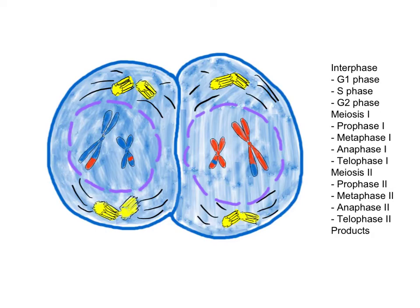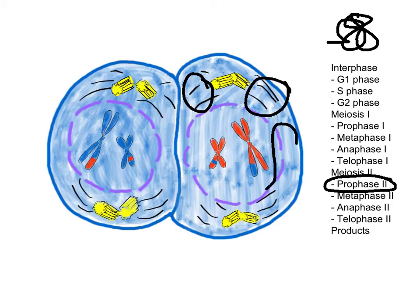In the first phase of meiosis 2, this is called prophase 2, the chromosomes once again condense so we can see them. They're no longer that squiggly chromatin, and we can actually see them. You can see that the spindles are beginning to form again, and our nuclear envelope is beginning to break down once again.